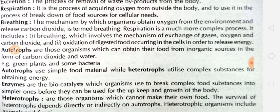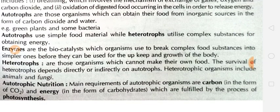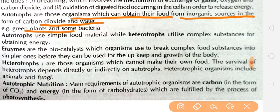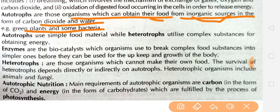So, respiration is a broad term. Autotrophs are those organisms which can obtain their food from inorganic sources in the form of carbon dioxide and water. Examples are green plants and some bacteria. This means these organisms make their own food from inorganic sources. Inorganic sources include gases, water, and minerals.